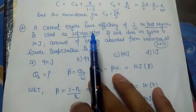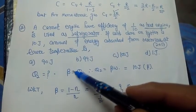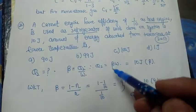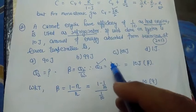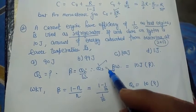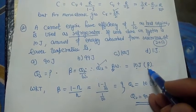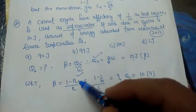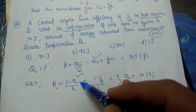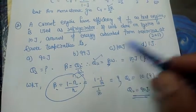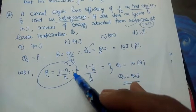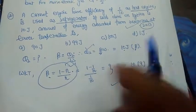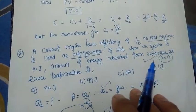The coefficient of performance β = Q₂ / W, where W = 10 joules. We use the important relation between β and η (efficiency of heat engine). Given η = 1/10, solving this relation gives β = 9. Therefore Q₂ = β × W = 9 × 10 = 90 joules.